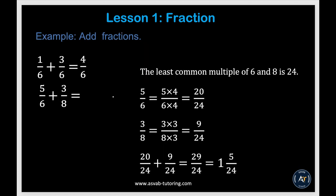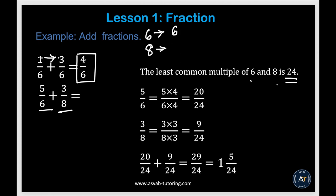Now we'll learn how to add fractions. First, make sure the denominators are the same — find a common denominator. For 1 over 6 plus 3 over 6, the common denominator is already 6, so just add the numerators: 3 plus 1 is 4 over 6. For 5 over 6 plus 3 over 8, the denominators are different, so you need to find the least common multiple. List the multiples of 6 (6, 12, 18, 24…) and 8 (8, 16, 24…) — the LCM is 24.